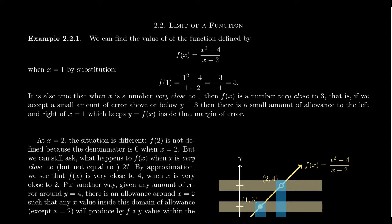By direct substitution, f of 1, you're going to replace each of these x's with a 1. In the numerator, 1 squared minus 4 equals negative 3. In the denominator, 1 minus 2 equals negative 1. Negative 3 divided by negative 1 equals positive 3. So the function is 3 when x equals 1.